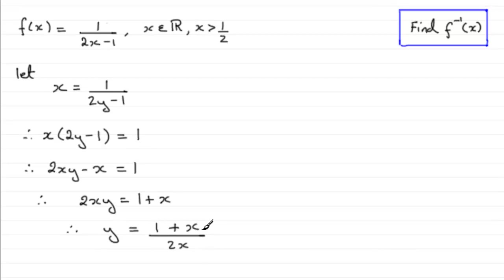We shouldn't really leave it like this though. What we do now is just change the y to the inverse function. So therefore we've got f minus 1 of x, the inverse function of f of x equals 1 plus x, then all divided by 2x.